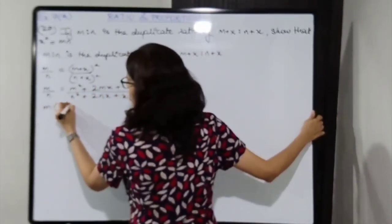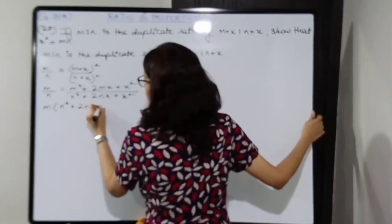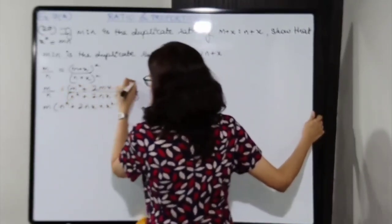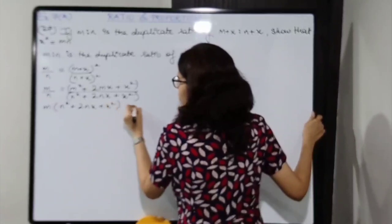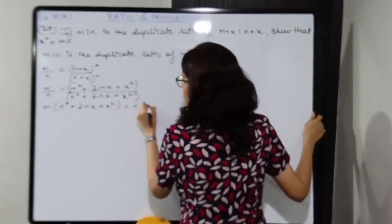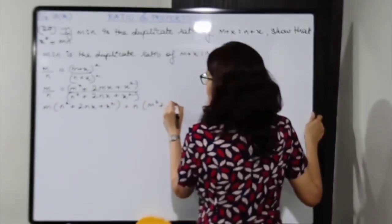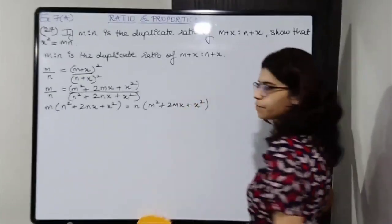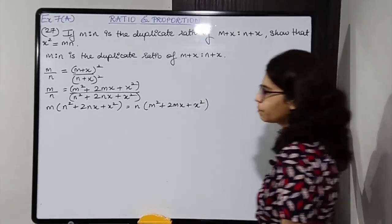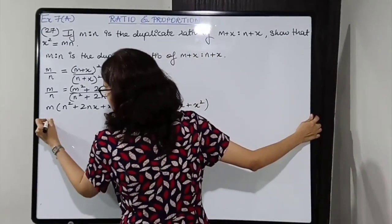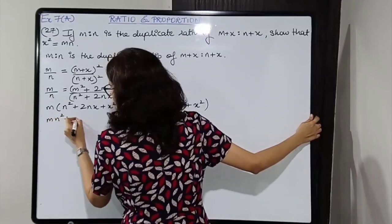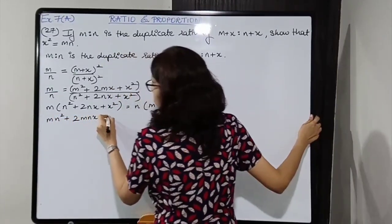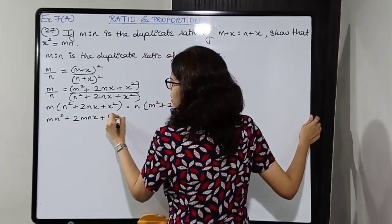So m into n squared plus 2nx plus x squared, with brackets, is equal to n into m squared plus 2mx plus x squared. Opening the brackets: mn squared plus 2mnx plus mx squared equals m squared n plus 2mnx plus nx squared.